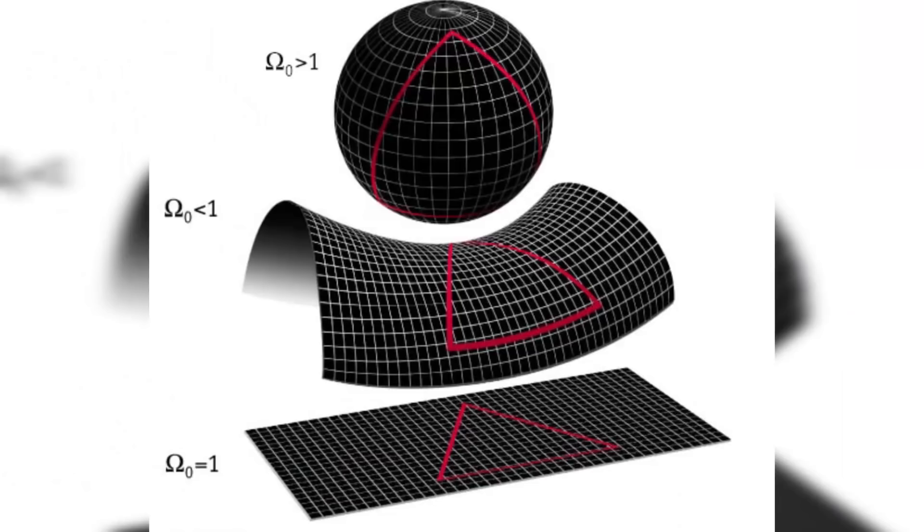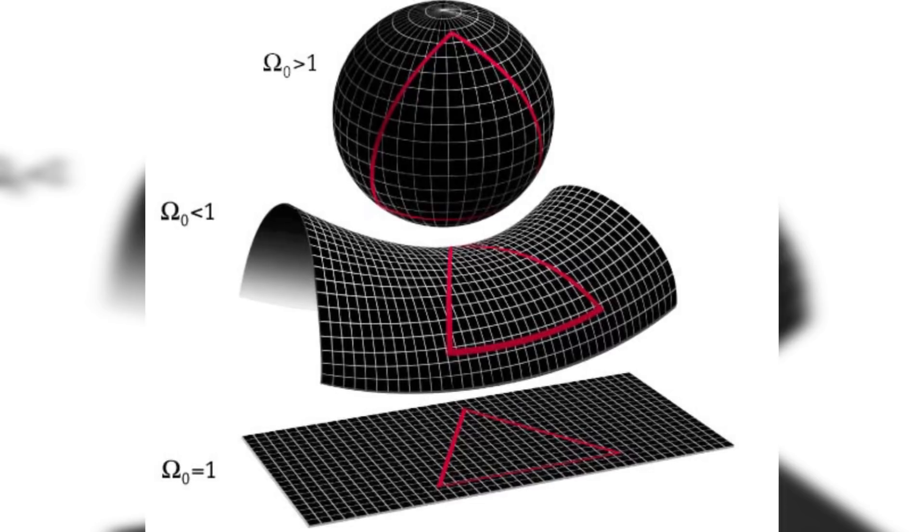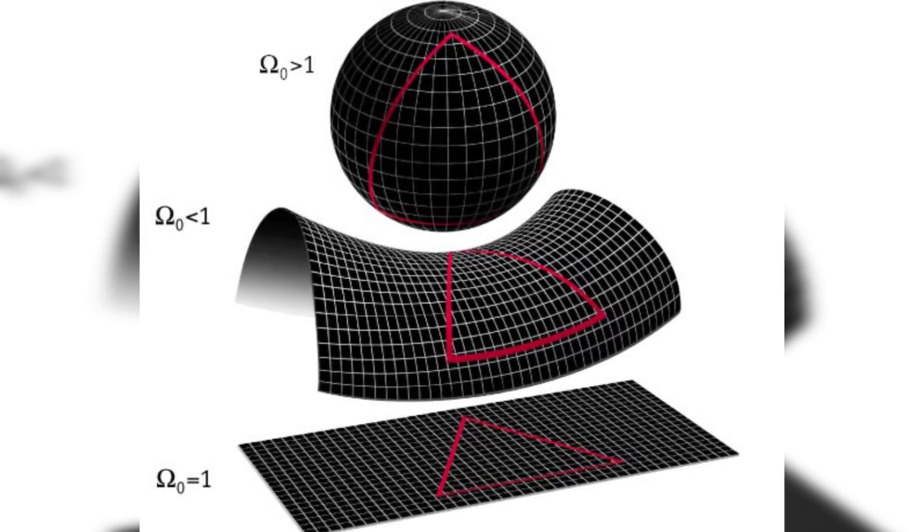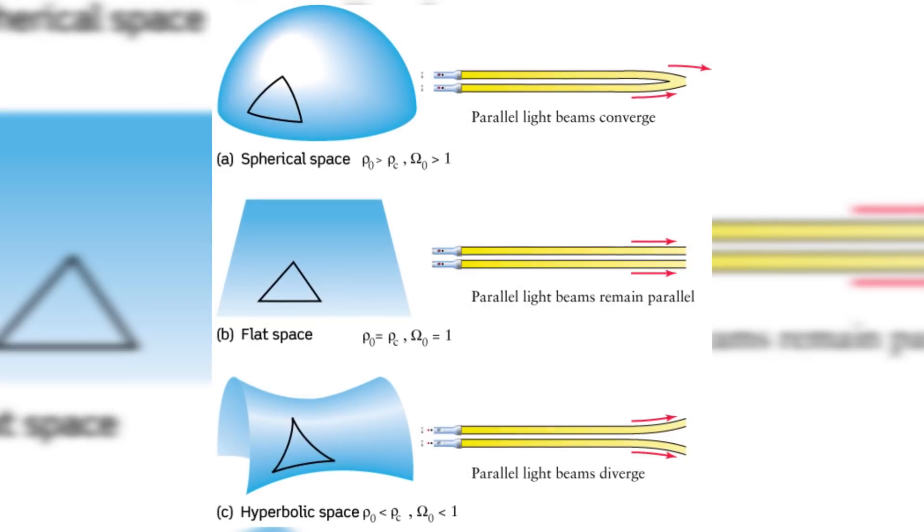Of these three, the flat universe is by far the most commonly held position. Because, as far as most scientists are concerned, the density parameter of the universe is 1. Or at least, very very close to it.